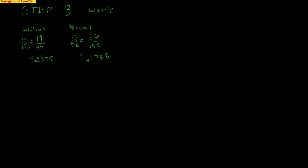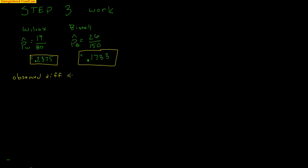Step three is the work. Our sample proportion at Wilcox is p-hat-W = 19/80 = 0.2375. Our sample proportion at Bissell is p-hat-B = 26/150 = 0.1733. The first thing I need is the observed difference: 0.2375 minus 0.1733 equals 0.0642. So according to our data, there's a difference of 0.0642 in favor of Wilcox — but remember, I don't care which school is higher, just that there's a difference.